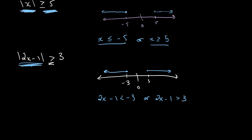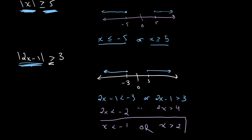All we need to do is solve algebraically. Adding 1 to the first inequality: 2x is less than negative 2, divide by 2, giving x is less than negative 1. For the second: adding 1 gives 2x is greater than 4, divide by 2, giving x is greater than 2. This is our final simplified answer.